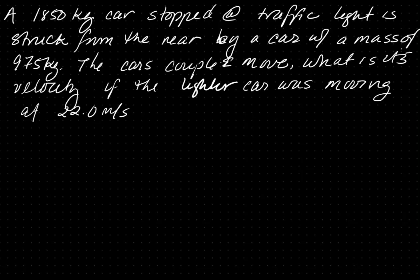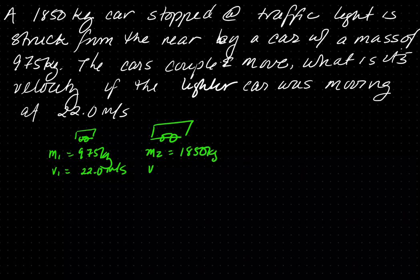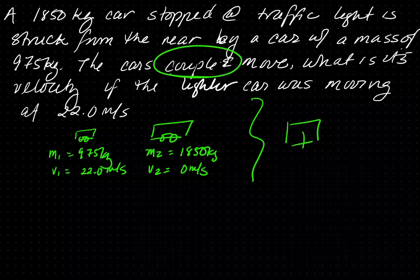In this problem we have a large car that is at rest, struck from behind by a smaller car traveling at 22 meters per second. Draw your picture. The smaller car has mass 1 of 975 kilograms and V1 of 22 meters per second. The larger car is mass 2 of 1850 kilograms with V2 equal to zero since it is at rest. That is the situation prior to collision. After collision, they are coupled — they stick together.